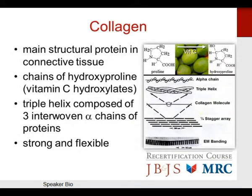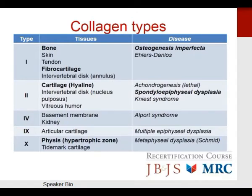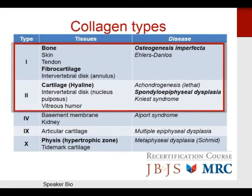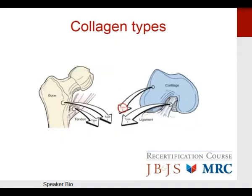Collagen is the main structural protein in connective tissue. It's composed of chains of hydroxyproline and forms a triple helix of three interwoven chains. Vitamin C hydroxylates proline into hydroxyproline to compose collagen — scurvy is an example of vitamin C deficiency. Collagen provides tensile strength for bone and connective tissues. Type 1 collagen is found in bone, skin, fibrocartilage, the annulus fibrosis of the intervertebral disc, as well as tendon and ligaments.